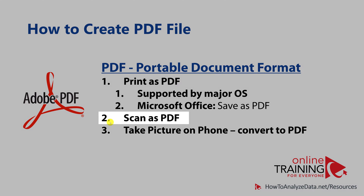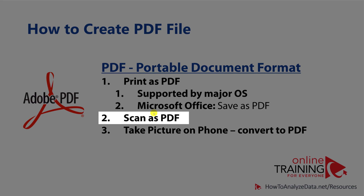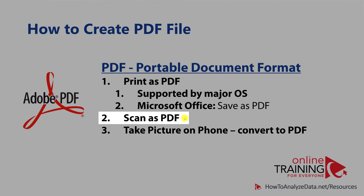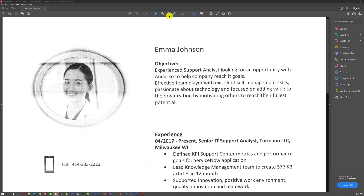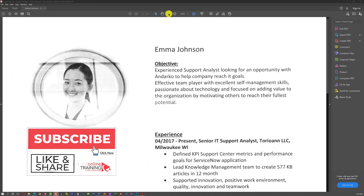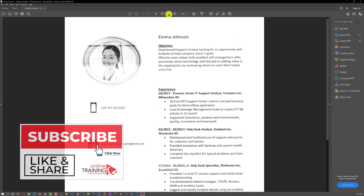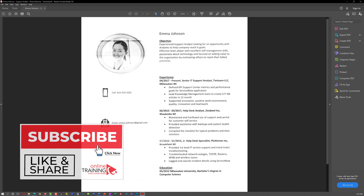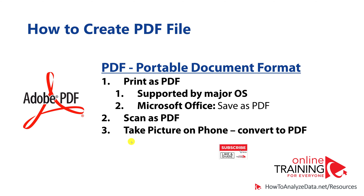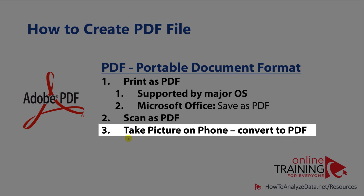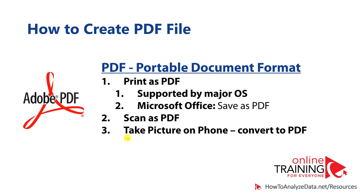You can also scan a printed copy of the document as PDF. You can typically scan the document as a black and white copy or colored copy. And last but not least, you can take a picture of the document on your phone and convert it into PDF — there are plenty of applications that can help you do it.